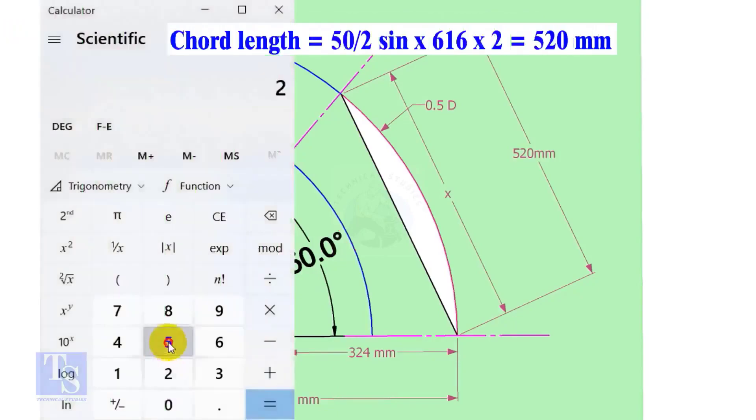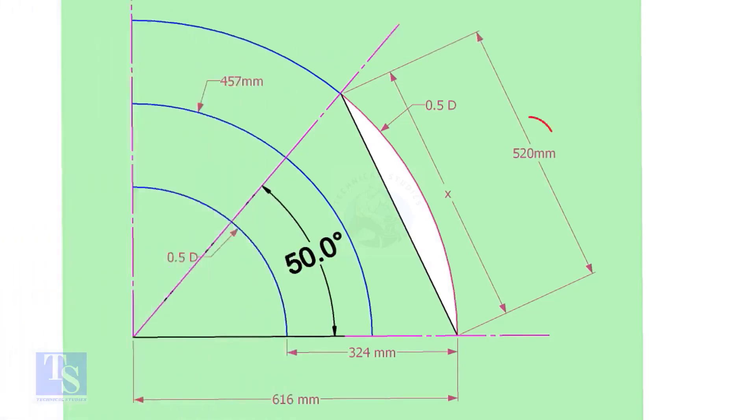Chord length equals 25 sine multiplied by 616, multiplied by 2, equals 520 millimeters. Mark the arc and the 50-degree line as shown.